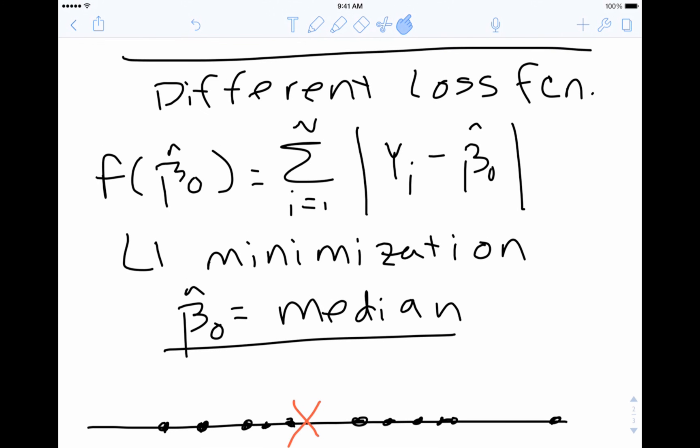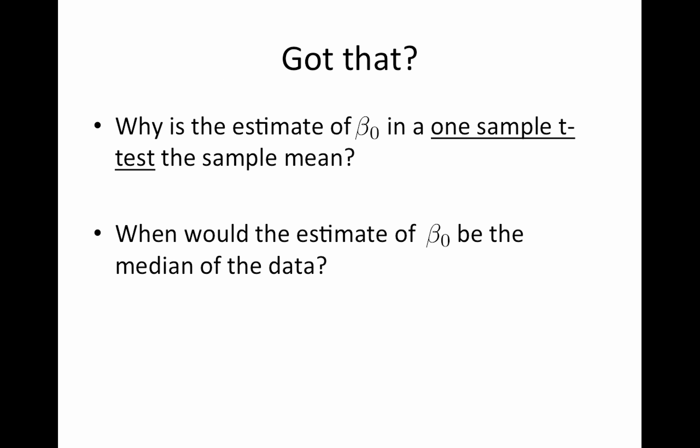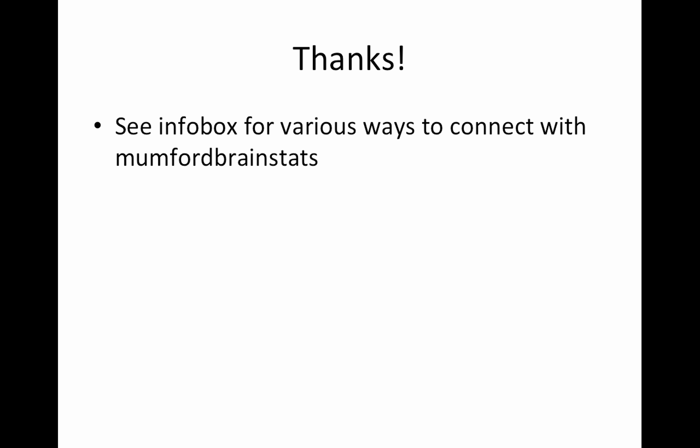Okay, so these handwritten notes I will post. There's a link in the info box that will take you to those. So now you should be able to answer this question: Why is the estimate of beta naught in a one-sample t-test the sample mean? So it's two pieces of information. Remember, beta naught is the best summary of all of our data and we're using least squares. That's why. Also, when would the estimate of beta naught be the median of the data? That's all I got. Thanks a bunch. See the info box for both the link to the notes I just wrote out as well as various ways to connect with Mumford Brain Stats. There's a Facebook group, I'm on Twitter, and there's the Tumblr. Talk to you later.